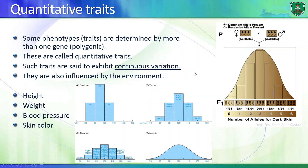This is known as continuous variation. You have involvement of other factors including the environment. Looking at skin color, for example, there are three genes responsible for it, producing a distribution where some individuals have very light skin and others have very dark skin, with individuals in between — a normal distribution.